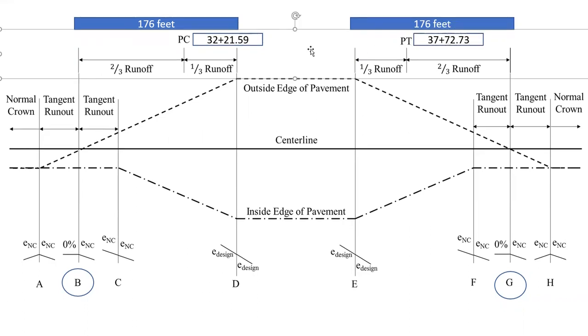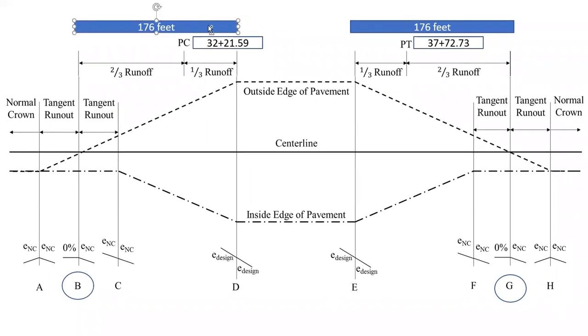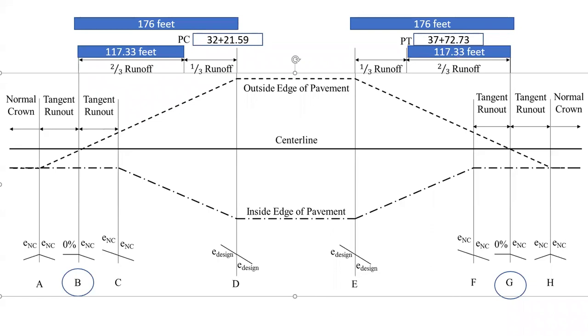So those are our two stations. To get from the PC to point B and from the PT to point G we need to go two thirds of the runoff. So we're going to multiply that 176 by two thirds and we're going to come up with 117.33 feet. Similarly for the PT we're going to need to go 117.33 feet past the PT to get to point G.